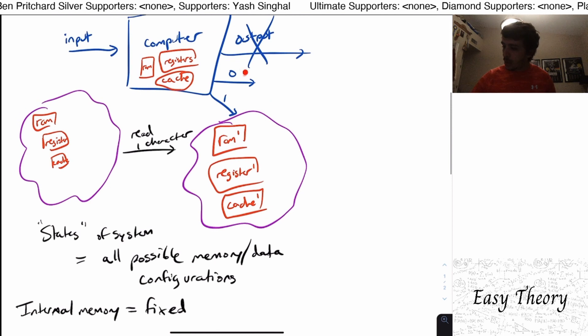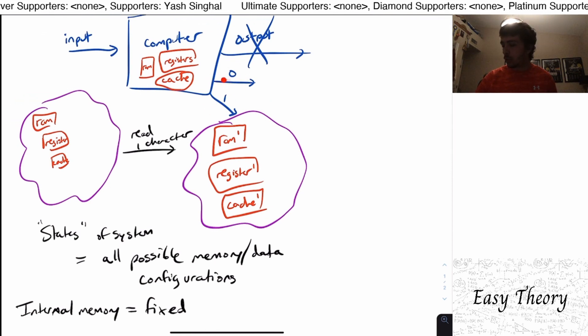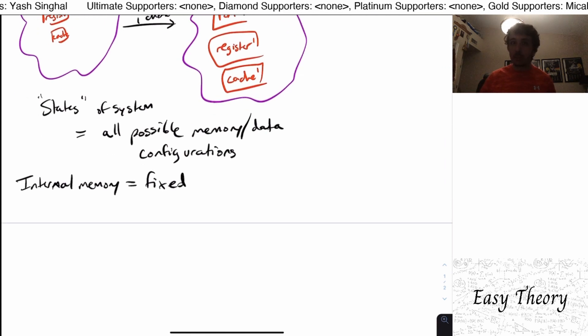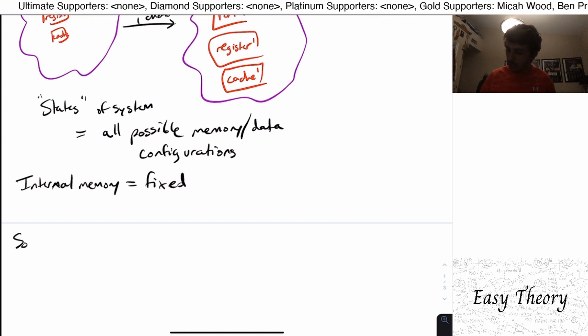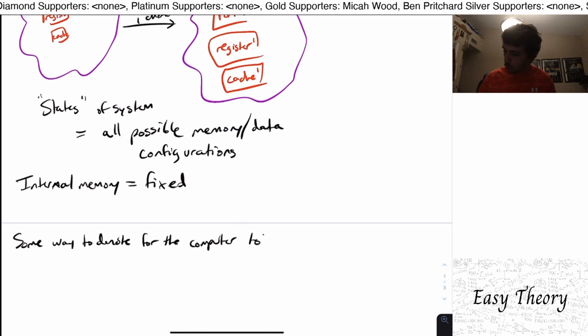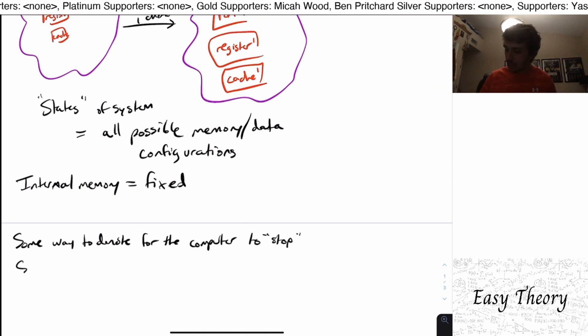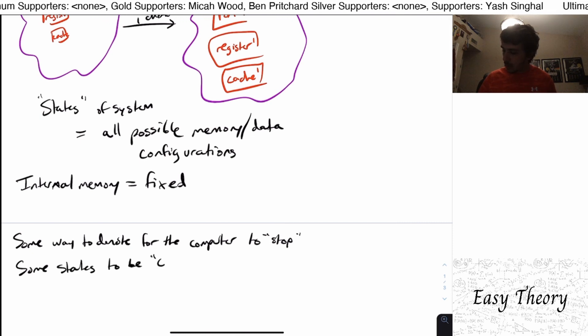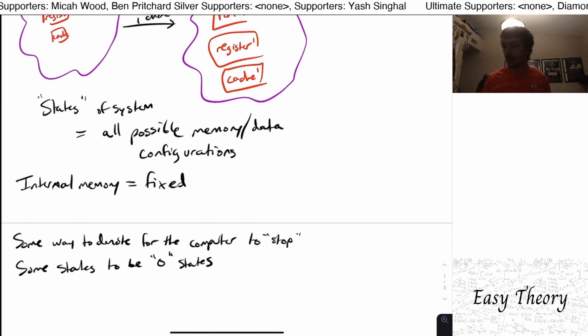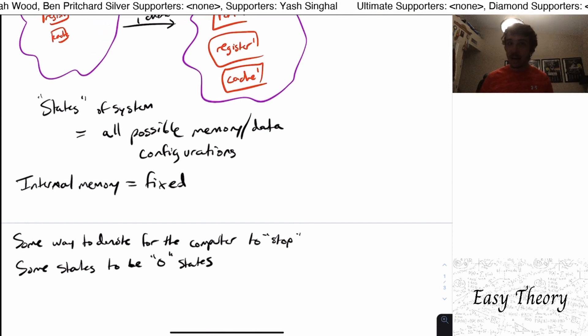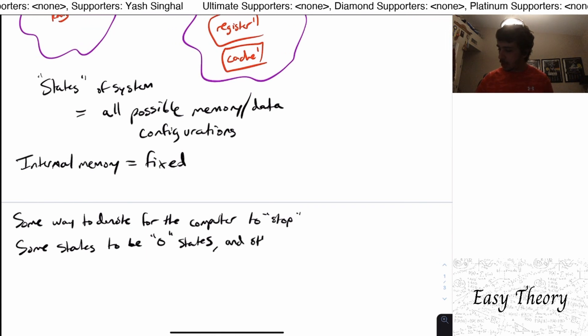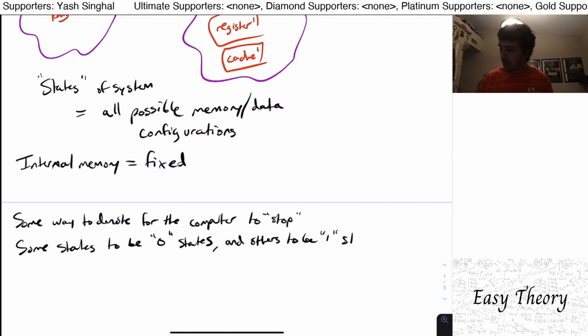So if we go back here, we notice that for some inputs, we're going to output a zero. And for some inputs, we might output a one. So what we need to do then is to say, well, there must be some way for the machine to stop. So some way to denote for the computer to stop. And we need to have some states to be zero states. So if we end up in that state, once we are done, then we're going to output a zero. And if we end up in a one state, then that means we're going to output a one if we have decided that the computer is done. So some states to be zero states, and others to be one states.